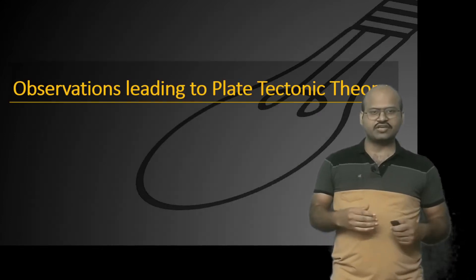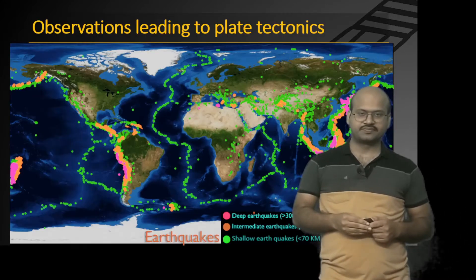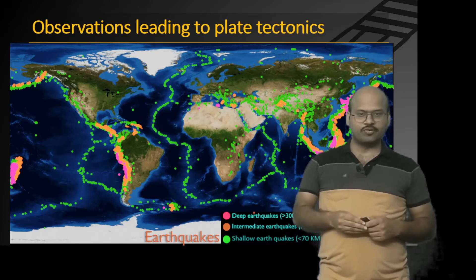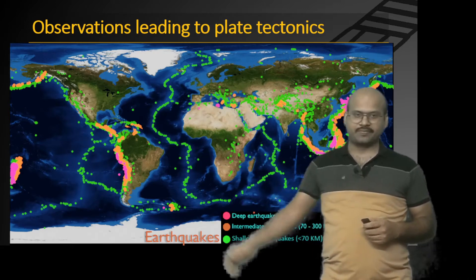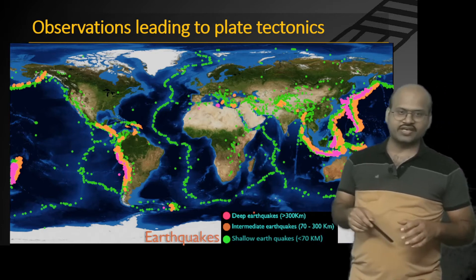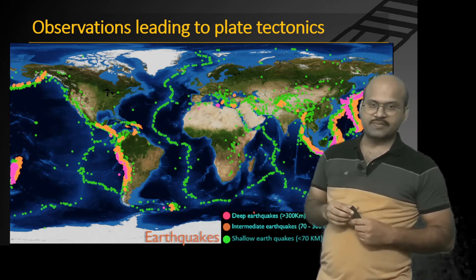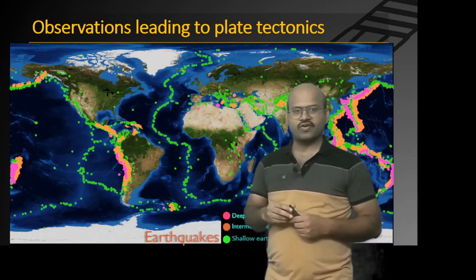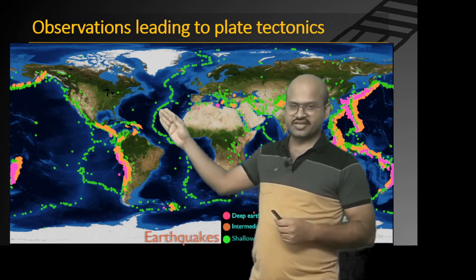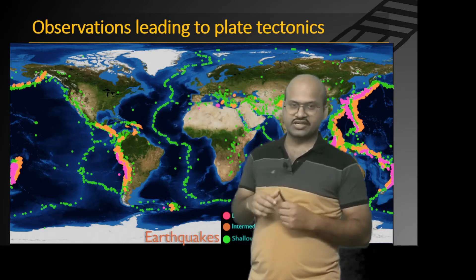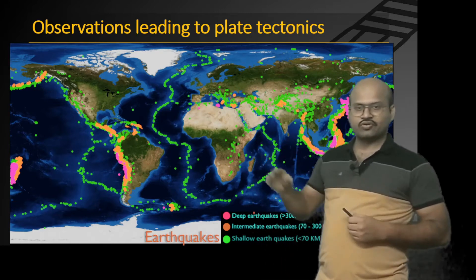Now let's see what were the observations leading to plate tectonic theory. First and foremost was the mapping of earthquakes on the world map. Geologists collected the occurrence of earthquakes and plotted them on a world map, and what they found was that earthquakes were concentrated in certain regions — there was a certain pattern where these earthquakes would occur.